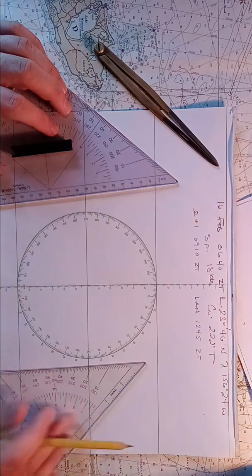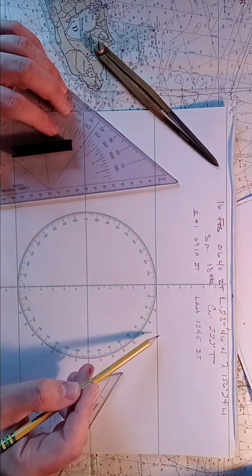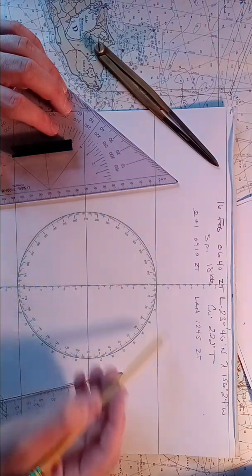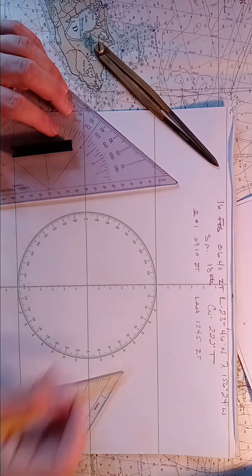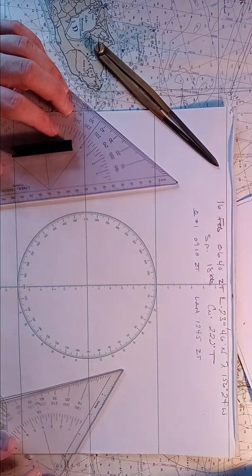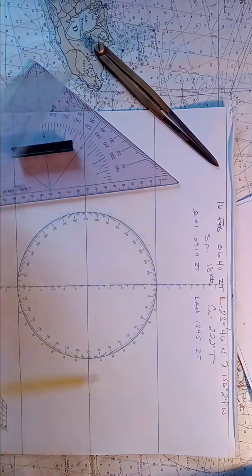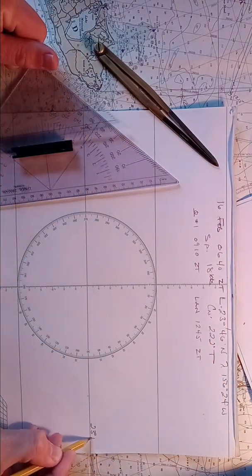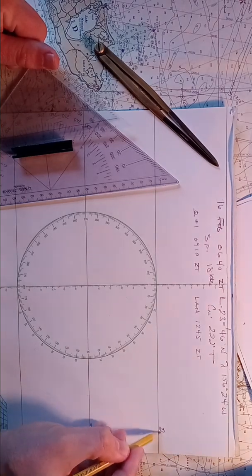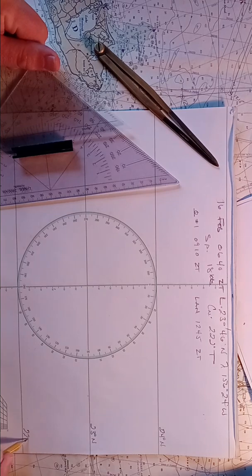Therefore, we're going to try to put our starting position up here so that our fix winds up in the middle of the plotting sheet. So the starting position at 2346, we're going to make our mid-latitude 23, which makes that 24, makes that 22 north.